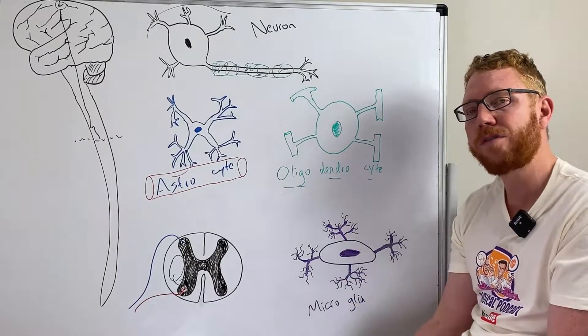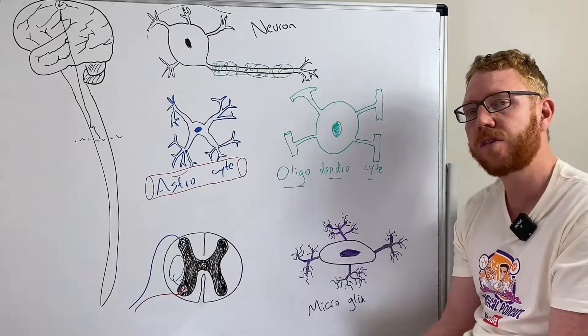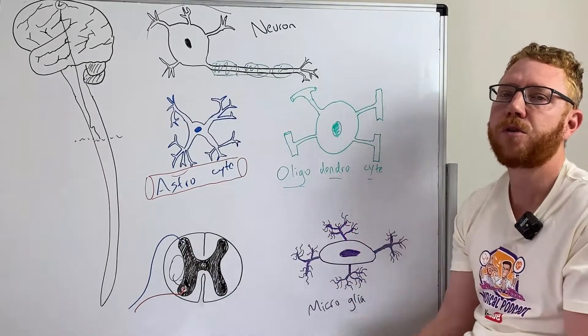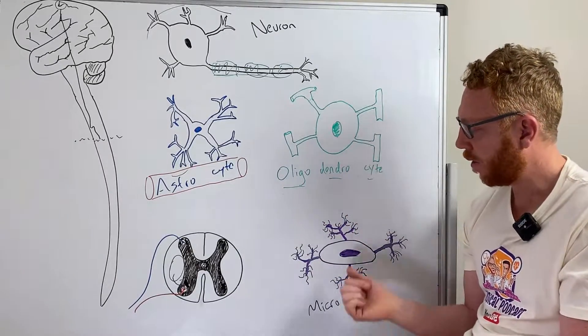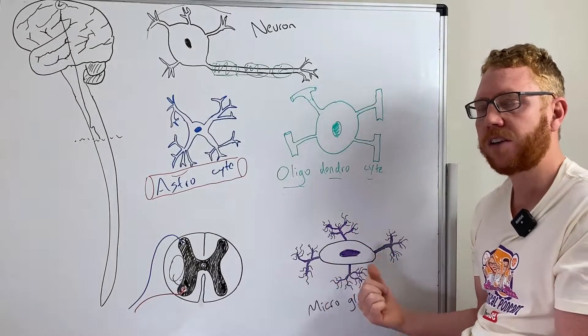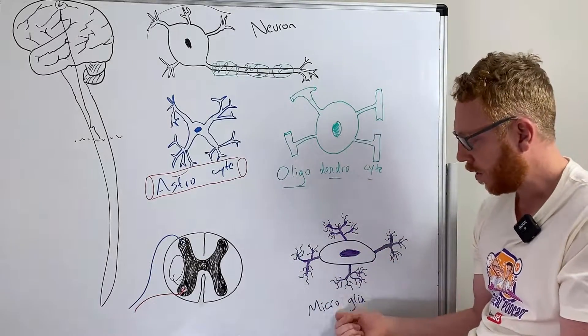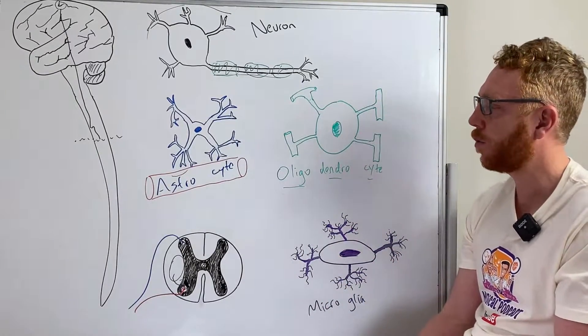It would also notify the other parts of the immune system to bring in help, bring in recruits to help clean things up. If there's injuries, infections, or inflammation, the microglia play a very important role there.